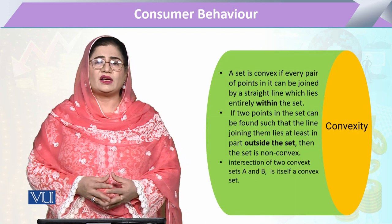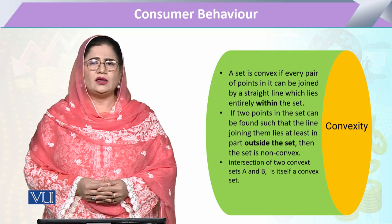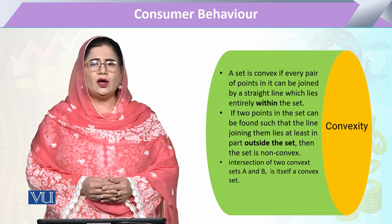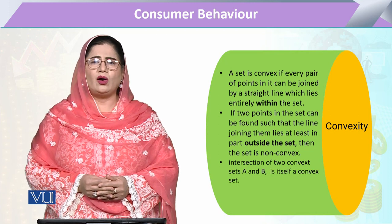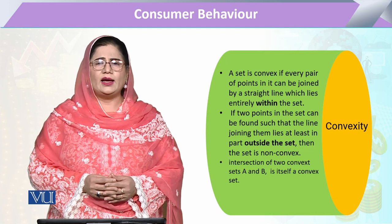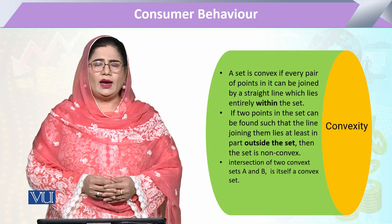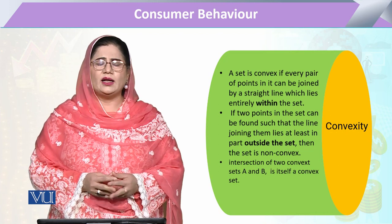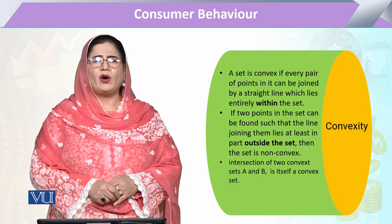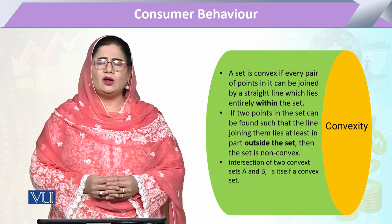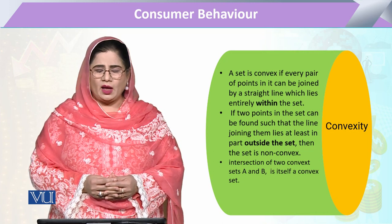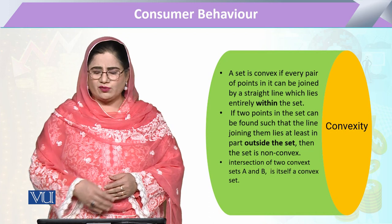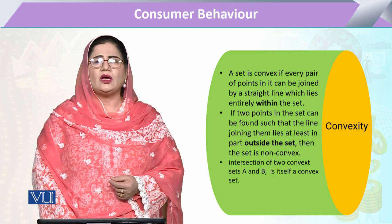Convexity means any set of points will be convex when any pair of points on that plane or curve can be joined by a line such that all other points in that set lie within it — no point is excludable. When all points are covered within the joined points on that plane, the set is called convex, and that is the main property of a feasible set.